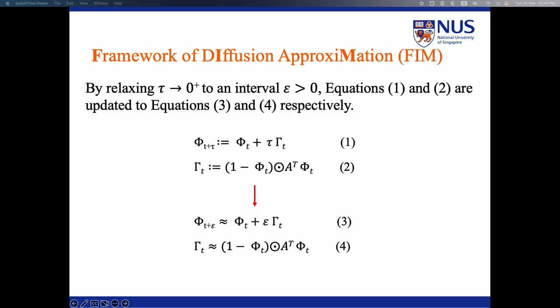However, it is not practical to consider infinitesimal interval in real-world application. Therefore, we relax tau to an interval epsilon and propose a framework of diffusion approximation, abbreviated as FIM.